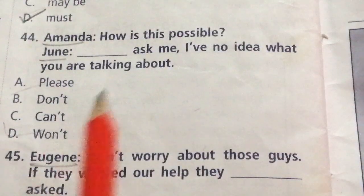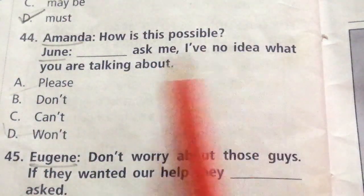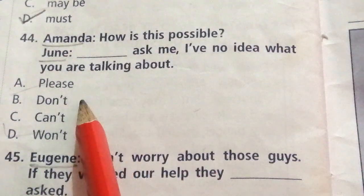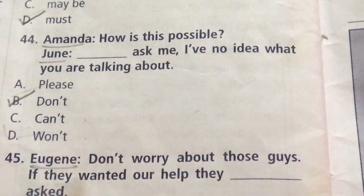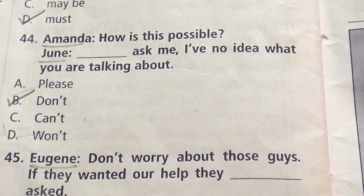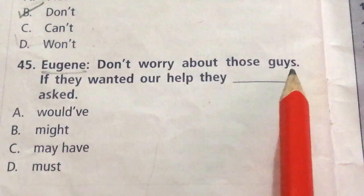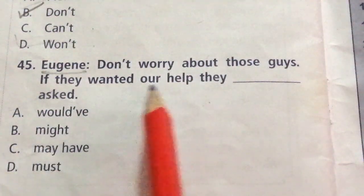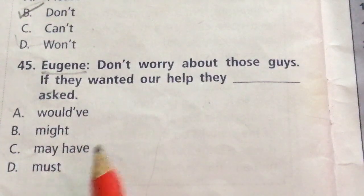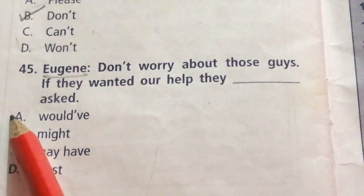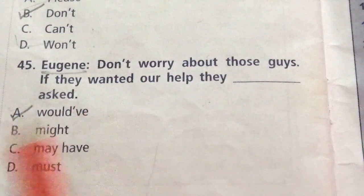Question 44 — Amanda: How is this possible? June: Dash ask me, I have no idea what you are talking about. Options: Please, Don't, Can't, Won't. The answer is B: Don't. Don't ask me, I have no idea what you are talking about. Question 45 — Eugene: Don't worry about those guys; if they wanted our help, they dash asked. Options: Would have, Might, May have, Must. The answer is A: Would have. If they wanted our help, they would have asked.